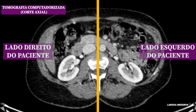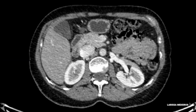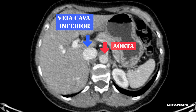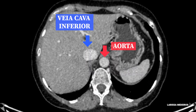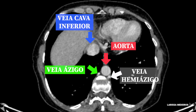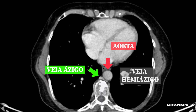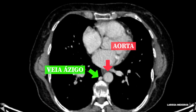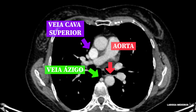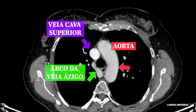Aqui, um exemplo de tomografia contrastada de tórax e abdômen. Lembrando que em tomografia, tudo que está do seu lado esquerdo é o lado direito da paciente. Adentrando o mediastino, nós vamos observar o trajeto da veia ázigos representada pela seta verde. A veia ázigos ascende pelo mediastino até o nível da quarta vértebra torácica, onde ela se arqueia sobre o hilo pulmonar direito e desemboca na veia cava superior.